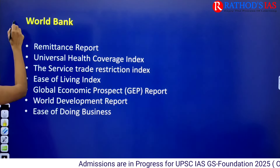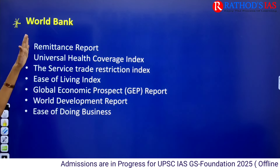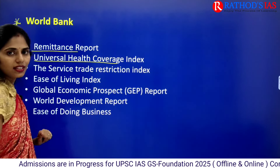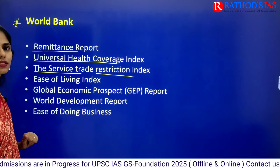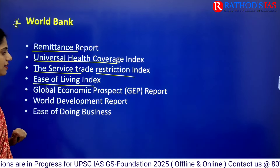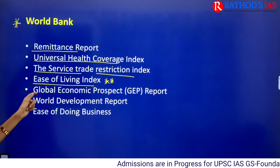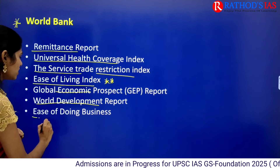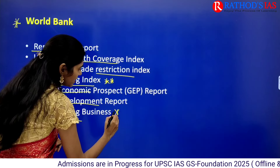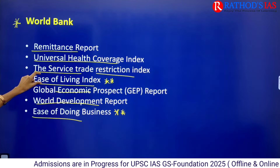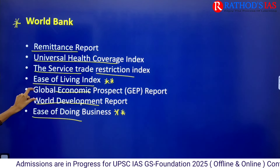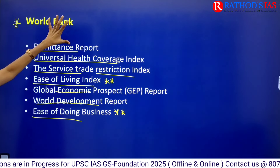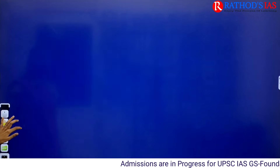Next is the World Bank, which releases several important indices: the Remittance Report, Universal Health Coverage Index, Service Trade Restriction Index, Ease of Living Index, Global Economic Prospects Report, World Development Report, and Ease of Doing Business. Both Ease of Doing Business and Ease of Living Index are frequently in the news. All these reports are released by the World Bank.